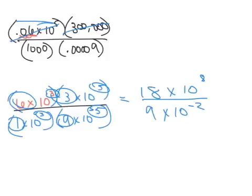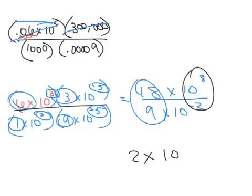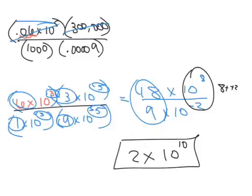Now we're just going to divide these two. 18 over 9 is 2, and 8 minus negative 2 — this is 8 minus negative 2, which means it's 8 plus 2, so that's going to be 10. And that ends up being our answer.